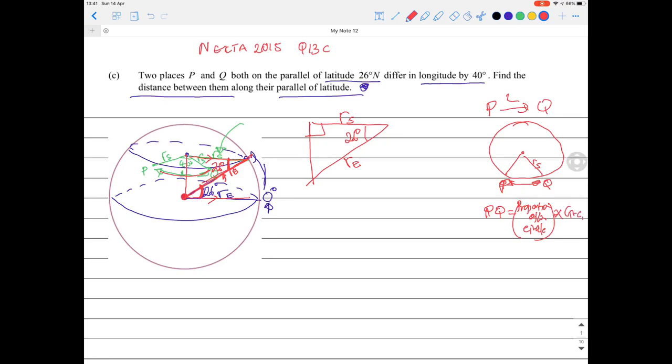So PQ is equal to - what's the proportion of the circle? We have 40 degrees between them, so the proportion is going to be 40 out of the whole circle. The whole circle is 360 degrees, so the proportion is 40 divided by 360 times the circumference. Circumference is 2 times pi times the radius of the latitude, this small circle. This is what we need to find first.